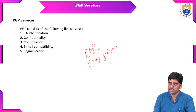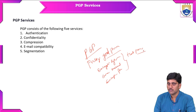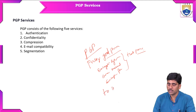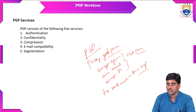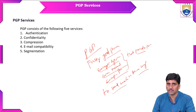Pretty Good Privacy is an encryption system, encryption method, or encryption process that provides a secure channel to send emails in a secure way. PGP is an encryption system that provides security for sending mails to the recipient.